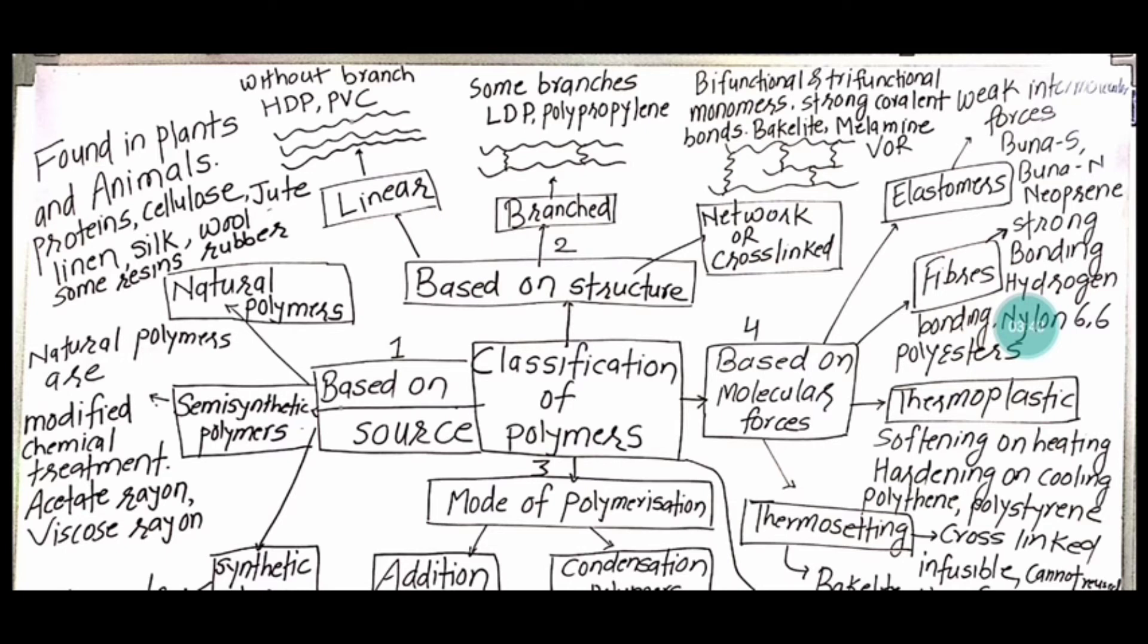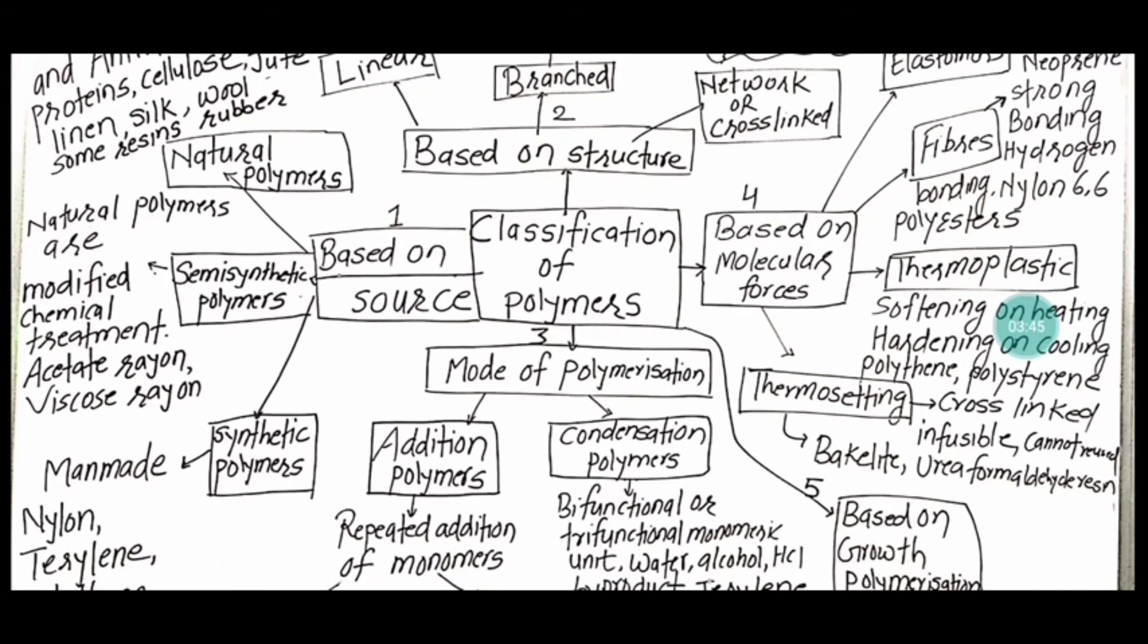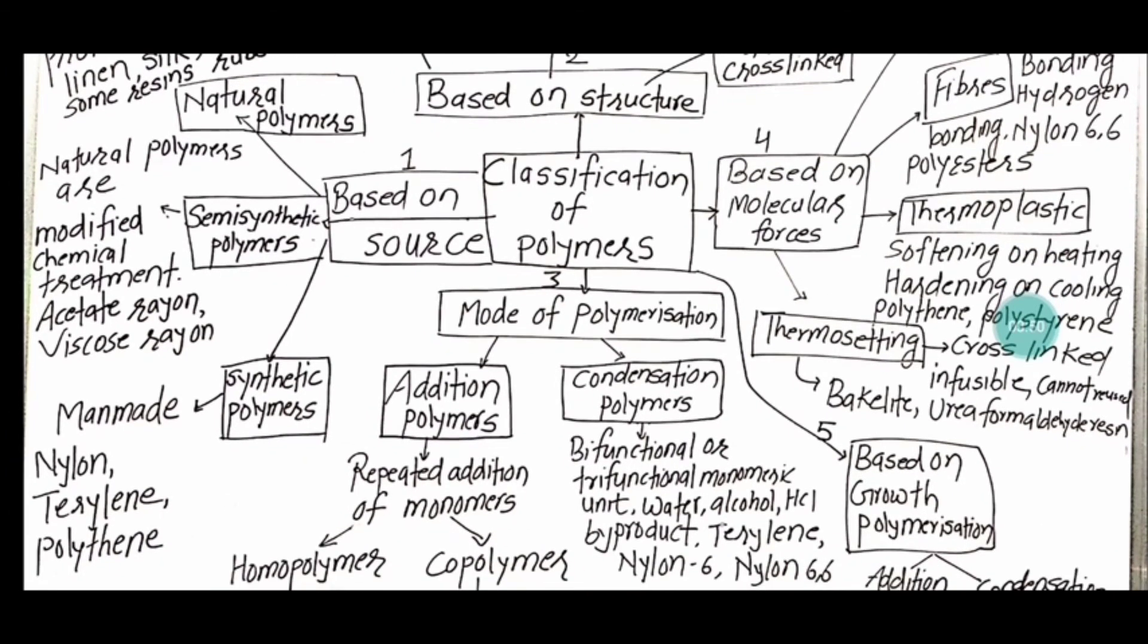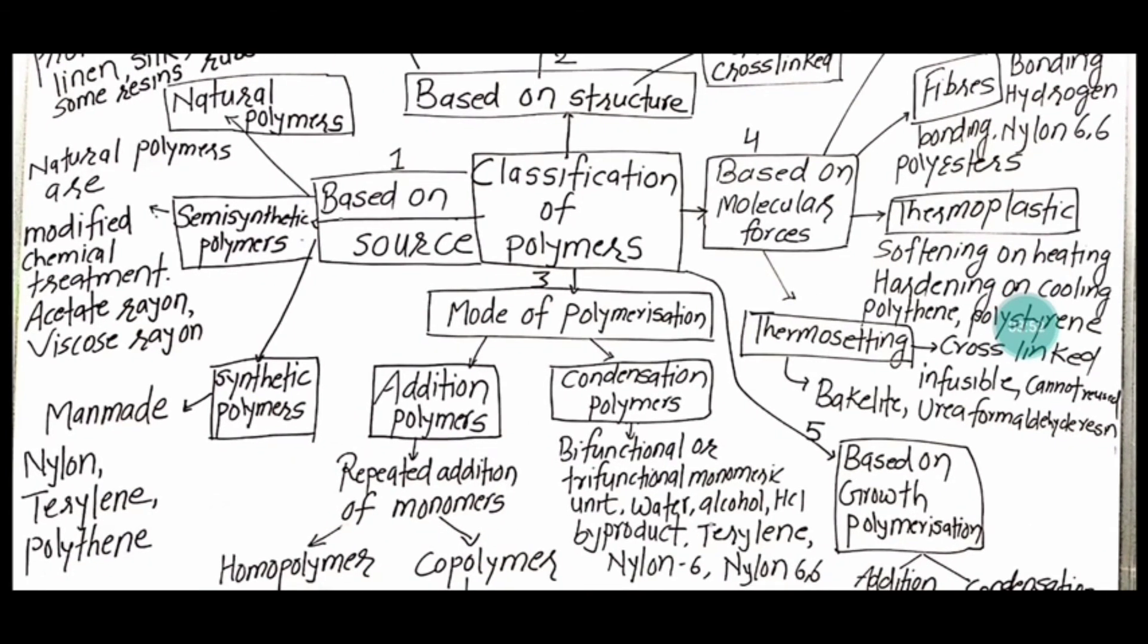Thermoplastics are intermediate between the elastomers and fibers. They get soft on heating and harden on cooling. Example we have polythene or polystyrene. In thermosetting, it is a cross-linked structure and once it gets formed, you cannot reuse it. After heating it, you cannot form another shape.